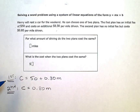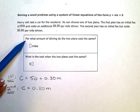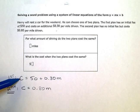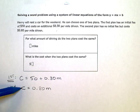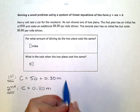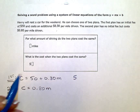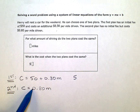Now this first part of the problem says for what amount of driving do the two plans cost the same? So if the cost is the same for both plans, then I can rewrite a new equation that just sets both of these expressions equal to each other.